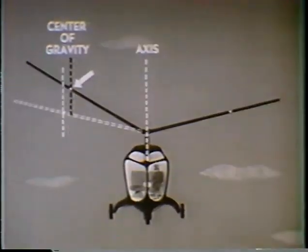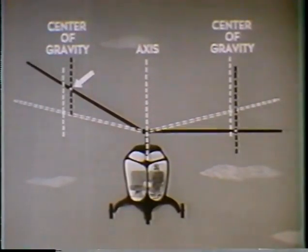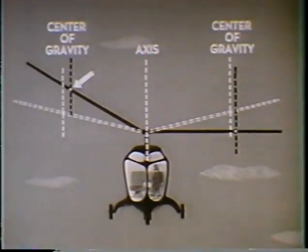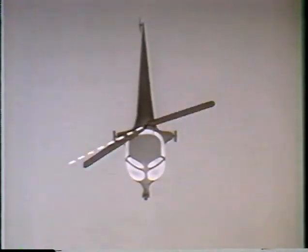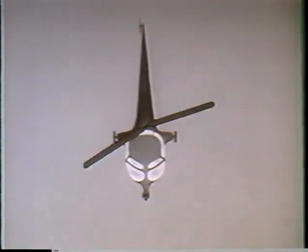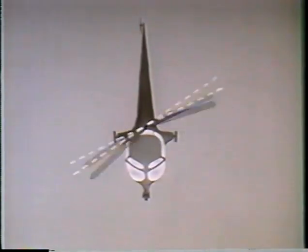At the same time, there is an opposite effect on the retreating blade. As the blade flaps down, the center of gravity has moved farther away from the axis of rotation. Because of the Coriolis effect, this center of gravity tends to slow down, which causes the retreating blade to slow down or lag behind. In other words, there is always a tendency for the advancing blade when it flaps up to gain speed and to lead ahead, while the retreating blade, when it flaps down, loses speed and will lag behind. This variation in lead and lag during each cycle of rotation may amount to several degrees.